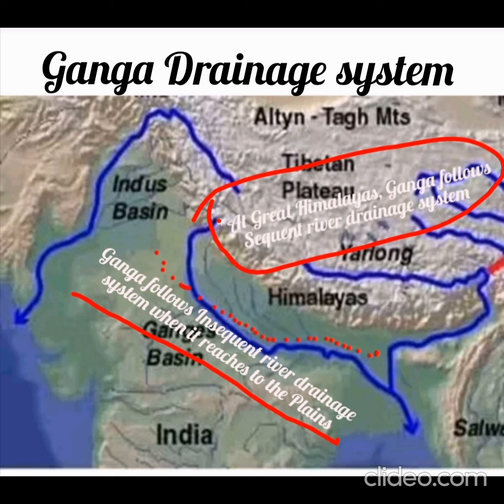There are two types of drainage systems. The first one is the sequent river system and the second one is the insequent river drainage system. Sequent river drainage systems are those which follow the slope and are adjusted as per the geological structure. Insequent rivers are those which do not follow the slope and do not adjust with the geological structure.